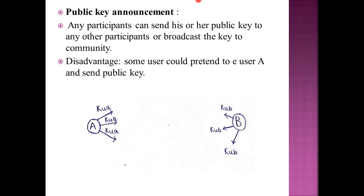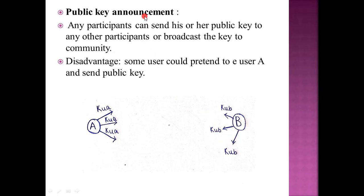The first technique is public key announcement. Any participant can send their public key to any other participant, or broadcast the key to the community. If I have a private key, I can send my public key to a community or a group of users and broadcast it.